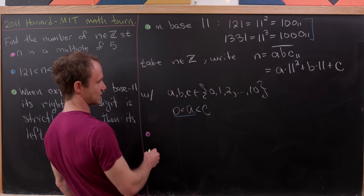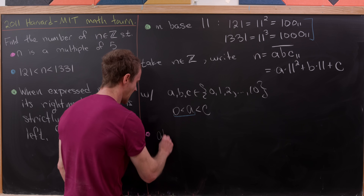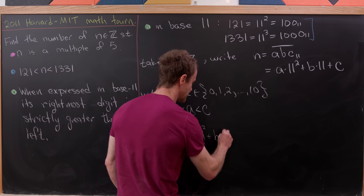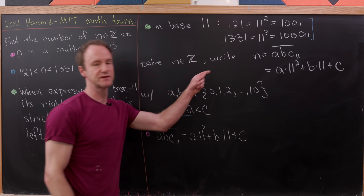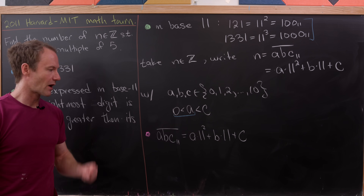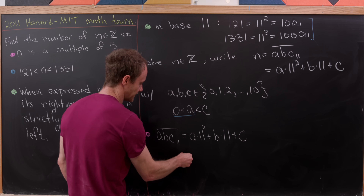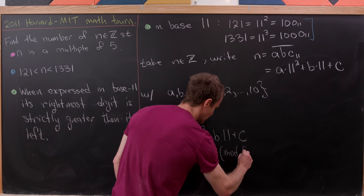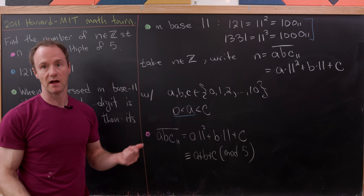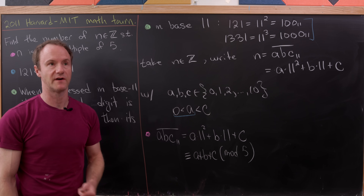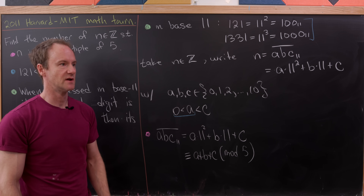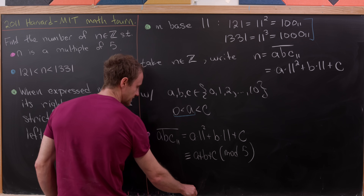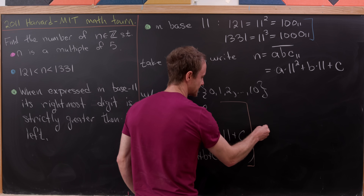Now let's use the magenta (multiple of five) condition. If we have abc in base eleven, that equals a times eleven squared plus b times eleven plus c. Reducing mod 5: since eleven is congruent to 1 mod 5, and eleven squared is also 1 mod 5, this whole expression is congruent to simply a plus b plus c modulo 5.